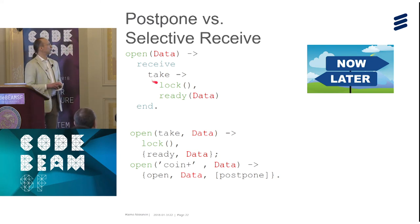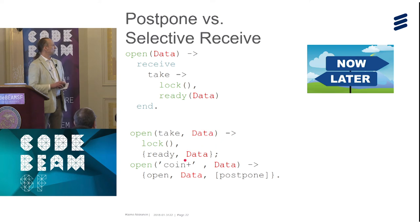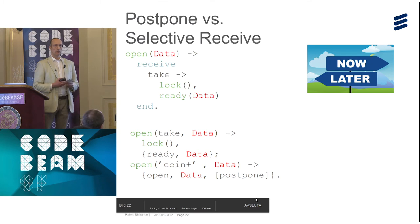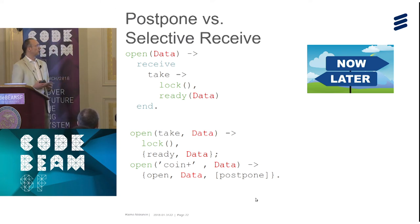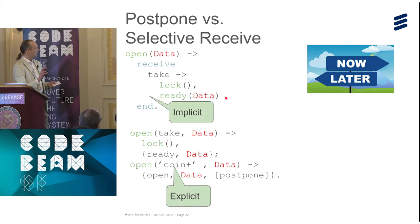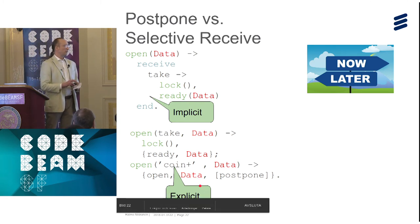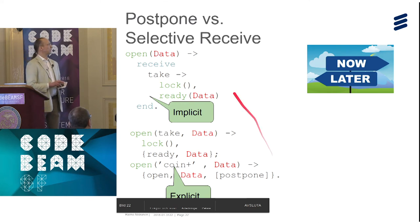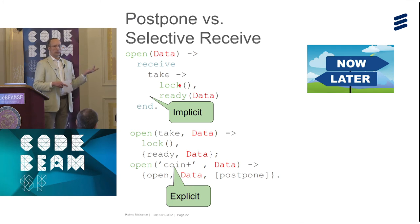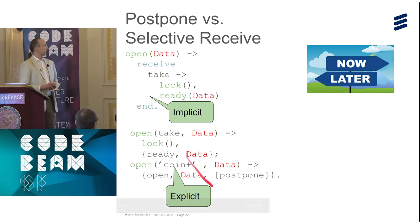The receive statement tells you what to consume and all other things are queued implicitly. The callback in gen_statem will give you all events, but you have the option to opt out — postpone means 'remind me later,' i.e., when I change states, I'll get this event back. With a plain receive, unknown events are implicitly queued together with unwanted events. With gen_statem postpone, you explicitly queue only the events you want to defer, and you can reject all truly unknown events. This gives better control of the queue.